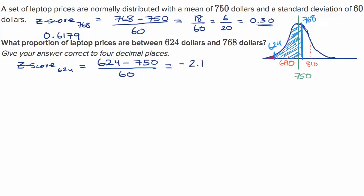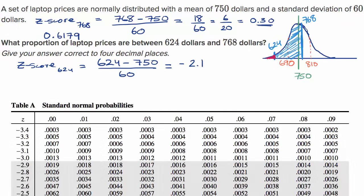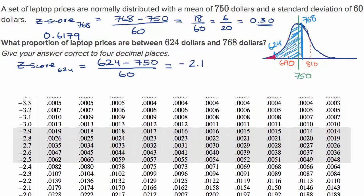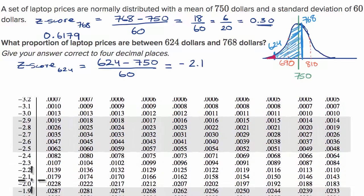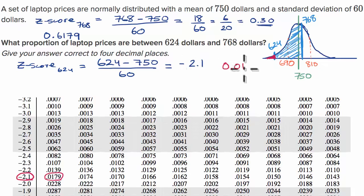To find the red area — the proportion less than $624 — we go back to the z-table, this time the negative z-score section, which starts at negative 3.4. We go to negative 2.1, or negative 2.10 to be precise, and with zero hundredths we find the proportion that is less than $624 is 0.0179.